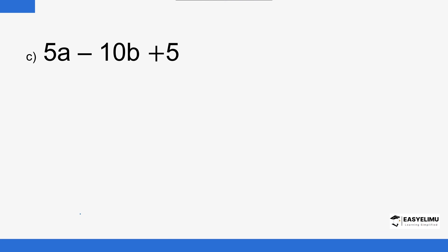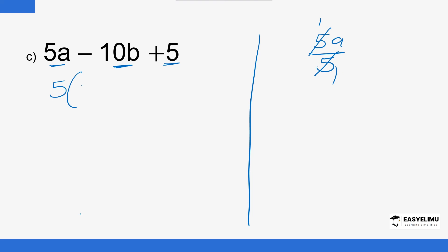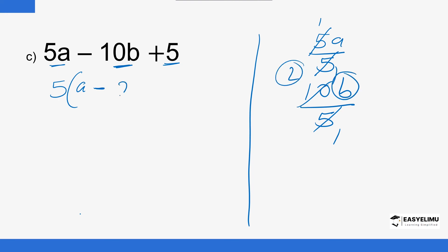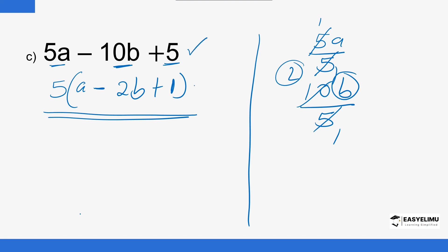Next we have 5a minus 10b plus 5. You can see there is a common factor — the highest common factor here is 5. We divide all terms by 5: 5a divided by 5 gives a, 10b divided by 5 gives 2b, and 5 divided by 5 gives 1. So this simplifies into 5 into (a − 2b + 1). That is the factorized form.